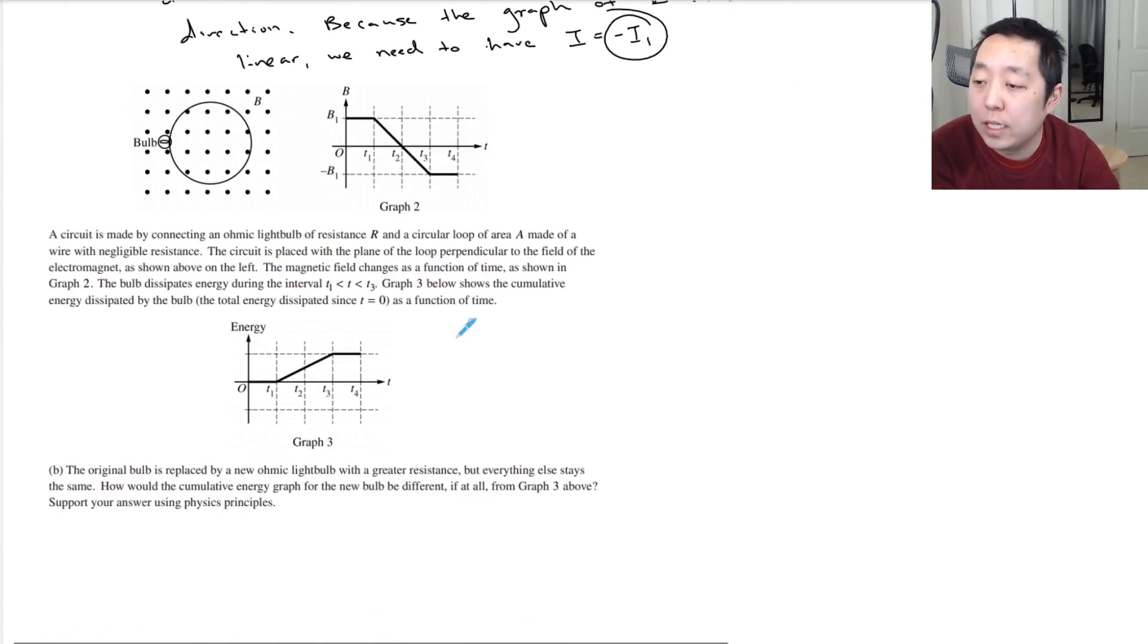A circuit is made by connecting an ohmic light bulb of resistance R and a circular loop of area A made of wire with negligible resistance. The circuit is placed with the plane of the loop perpendicular to the field of the electromagnet shown on the left.